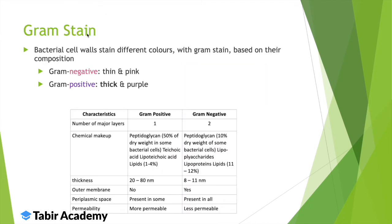Gram staining is a way of classifying bacteria into two types based on staining. We apply a dye and the color differs depending on whether they are gram-negative or gram-positive. The difference comes from the cell wall. Gram-negative bacteria have a thin cell wall and stain pink, while gram-positive bacteria have a thick cell wall and stain purple.